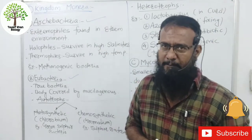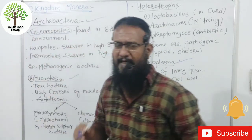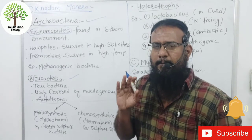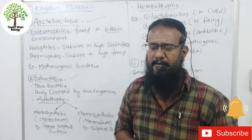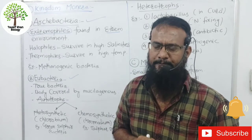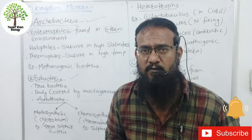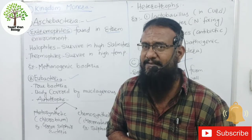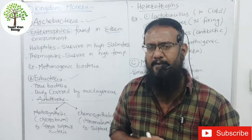Archaebacteria — what are the examples? Archaebacteria are extremophiles. The organisms which belong to Kingdom Monera, and more specifically to Archaebacteria, are also called extremophiles. Why are they called extremophiles? Because they live in extreme environments — very warm places or places with a lot of salinity.